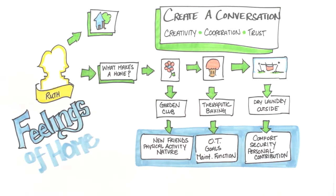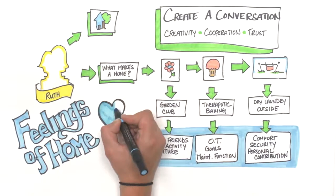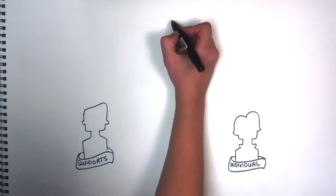we're connecting with her, building trust, and are able to learn more about who Ruth is as a person. Now, we can take steps to create a living environment that respects Ruth's values and reflects what home really means to her.